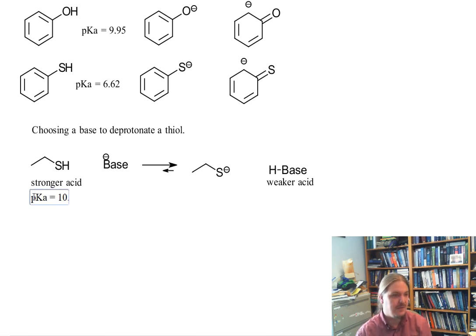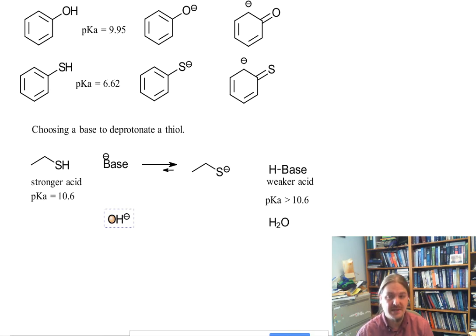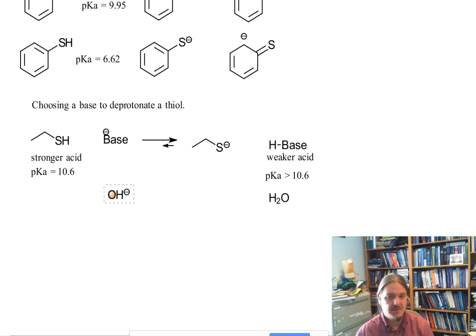We have this pKa value of 10.6 and any acid with a pKa greater than 10.6, the conjugate base of that acid is going to be a good base to deprotonate a thiol. For example, water has a pKa of 15.7, so hydroxide would be a good base to use. And anything that is more basic than hydroxide is going to be an appropriate base to deprotonate a thiol.